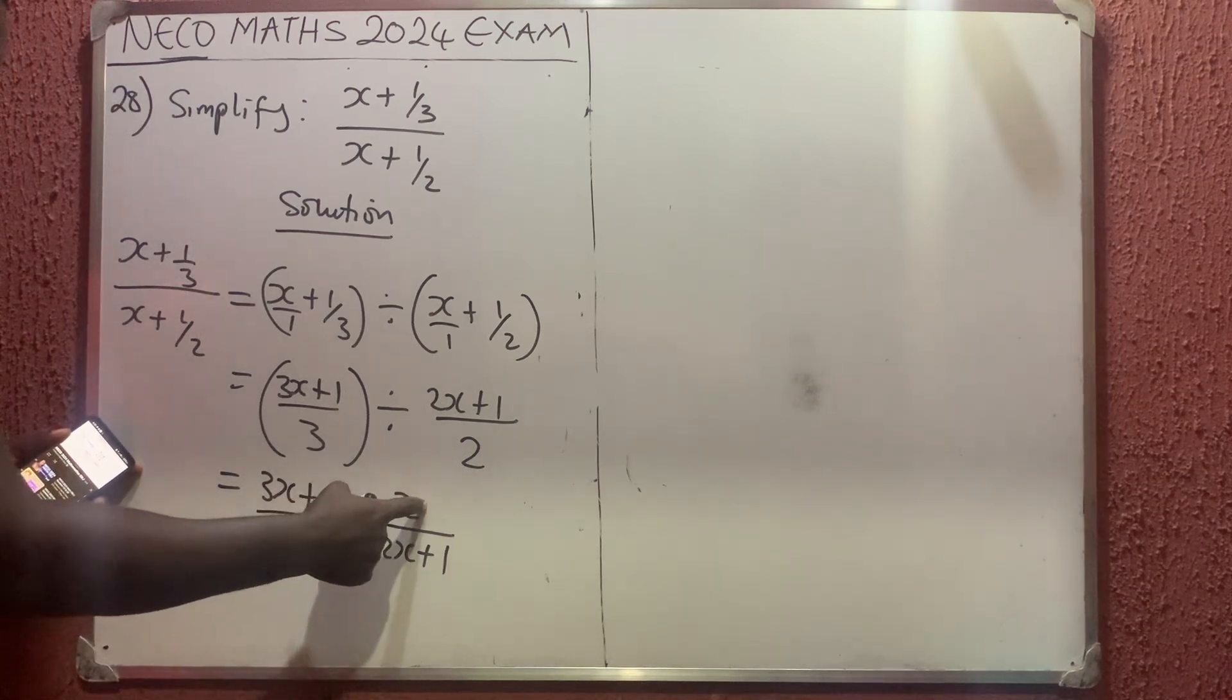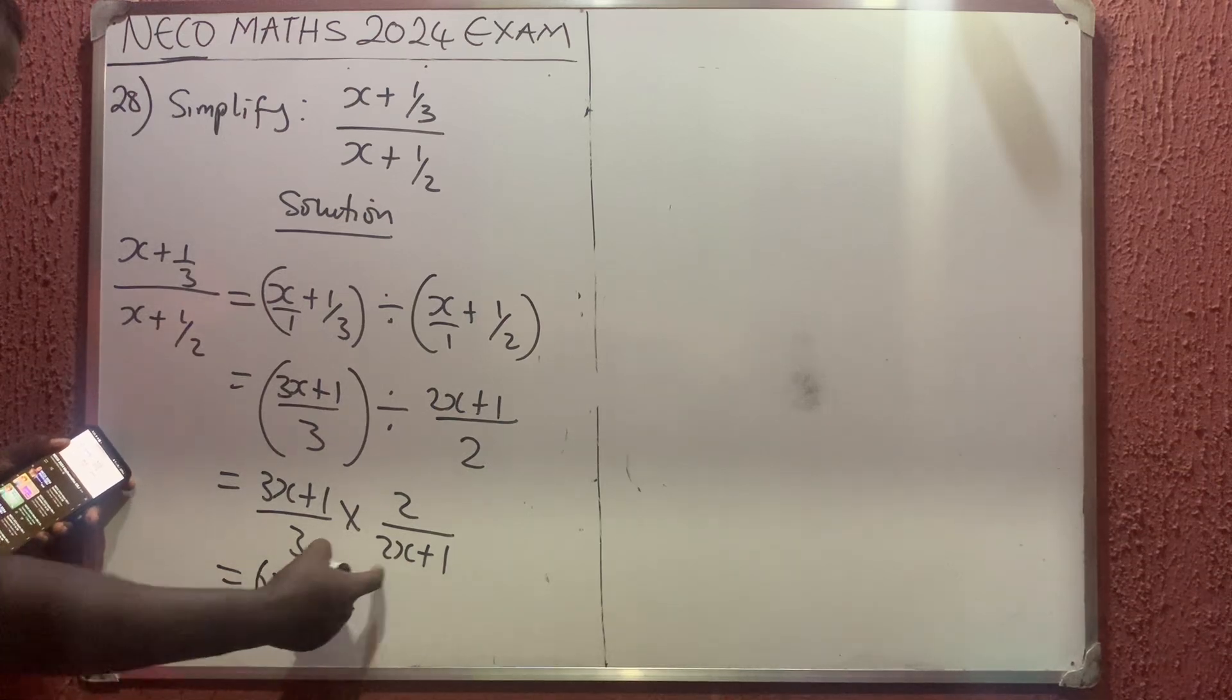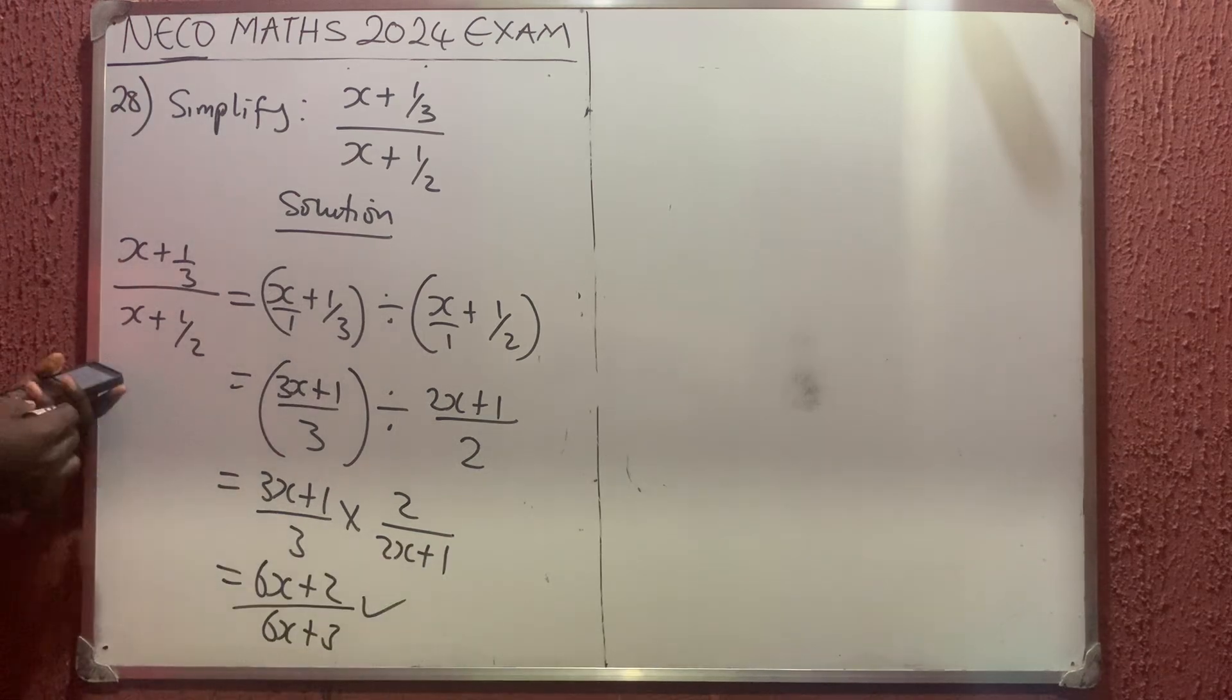If you multiply these out, you get (6x + 2)/(6x + 3). So that is the simplification.